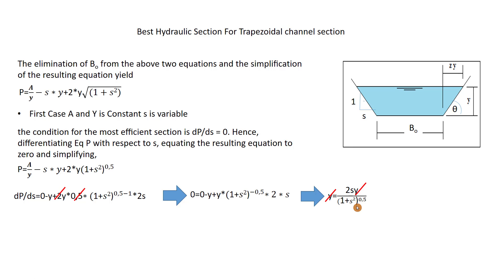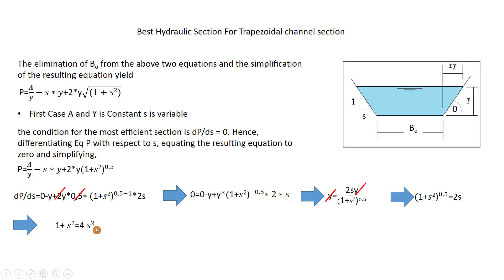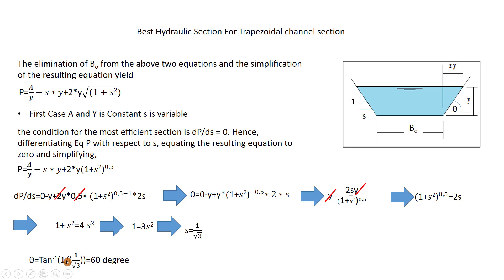The y terms cancel, and taking (1 + s²)^0.5 to the left gives (1 + s²)^0.5 = 2s. Squaring both sides: 1 + s² = 4s². Rearranging: 1 = 3s², so s = 1/√3. To find the angle theta: θ = tan⁻¹(1 / (1/√3)) = tan⁻¹(√3) = 60°. So for Case 1, the angle of the sides must be 60° for the best hydraulic section.